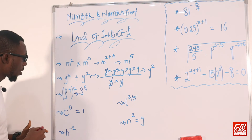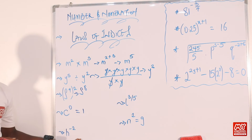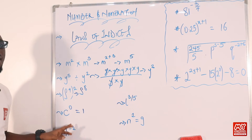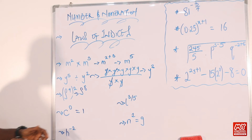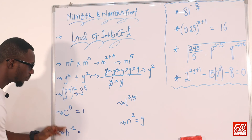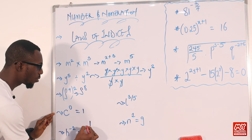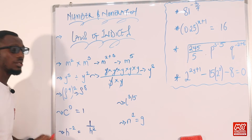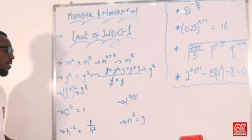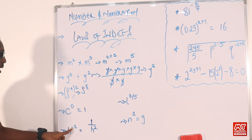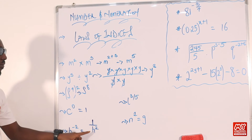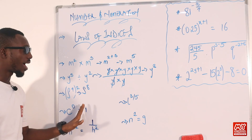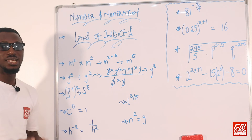Then we have the negative index law. If the power you are having has a negative value, this minus means 1 over H raised to power 2. So H raised to power negative 2 equals 1 over H raised to power 2. The minus here means 1 over H raised to power 2. This is another law that we are going to need.